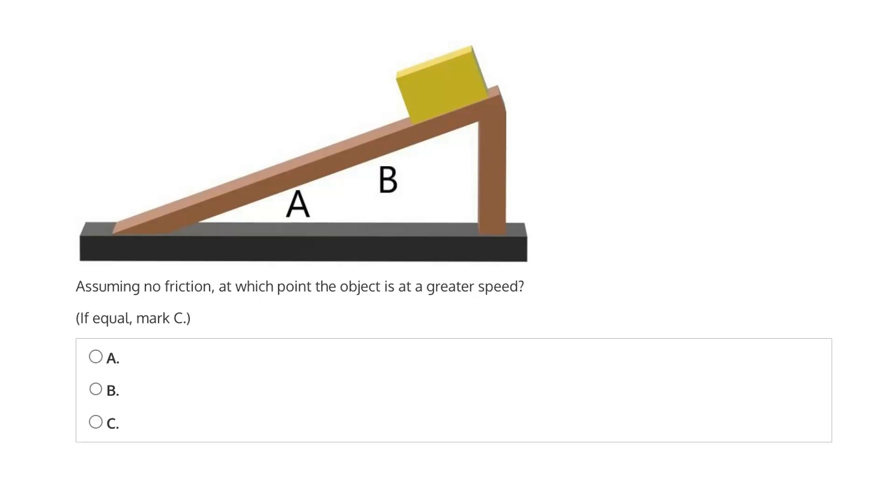So this question says, assuming no friction, at which point is the object at a greater speed? Point A, towards the bottom of the plank? Point B, towards the top of the plank? Or, if equal, mark C?